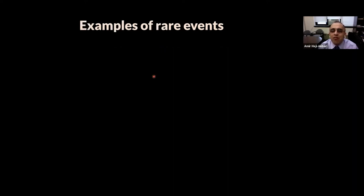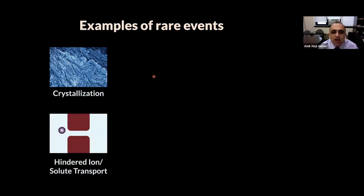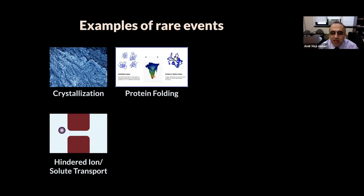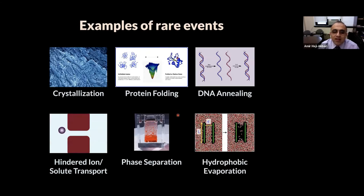There are many examples of processes that can be rare events in material science and biology. Today I will be talking about crystallization at length, but another phenomenon we study is the hindered transport of ions and small molecules through nanoporous membranes. Other phenomena we are marginally interested in include protein folding, DNA hybridization, and hydrophobic evaporation. The reason that rare events are rare is because their occurrence requires crossing a free energy barrier, and the system has to find the right fluctuation to go through that barrier. The larger the barrier, the longer it will take.